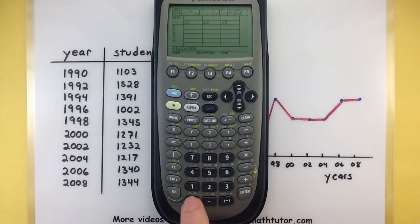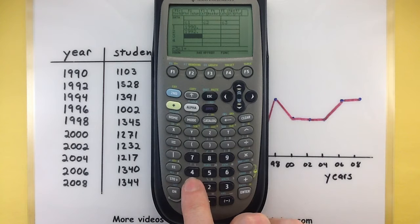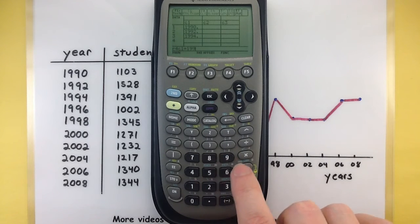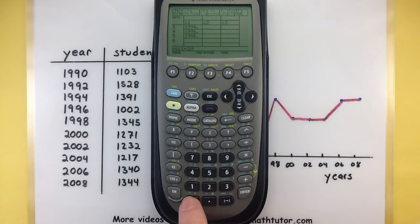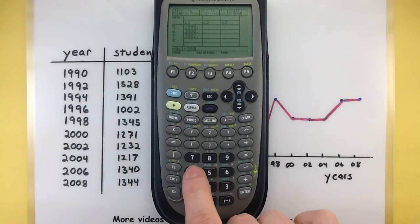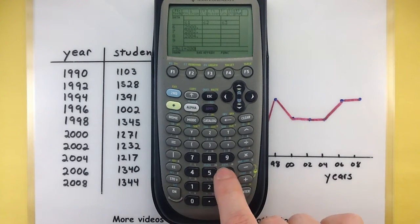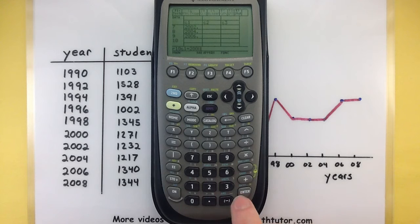Let's start off with the year, so 1990, enter 1992, and all the way down the line. Perfect, we have all of our years in there.